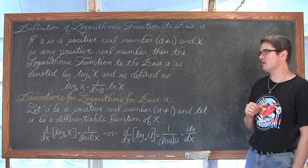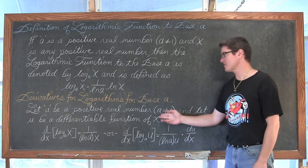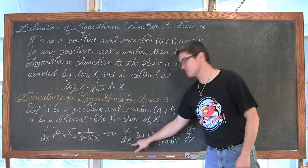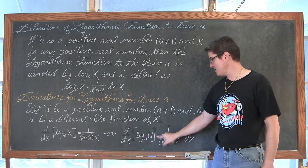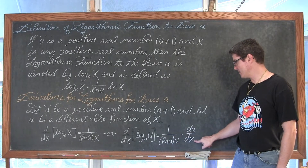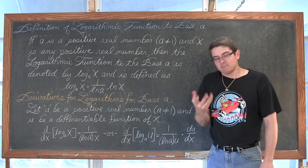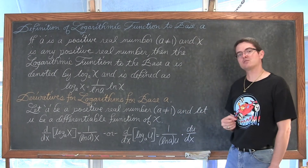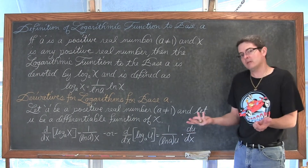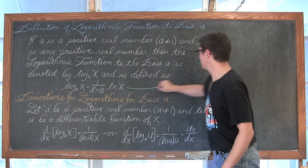Derivatives of natural logarithms for base a: let a be a positive real number not equal to one, and let u be a differentiable function of x. The derivative with respect to x of log base a of u is equal to one over the natural log of a times u, times the derivative of u with respect to x. You can see that u prime over u should look familiar from finding derivatives of natural log functions. The natural log of a appears in the denominator, so you can memorize this rule or change the base from base a to base e.